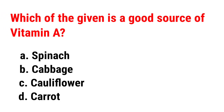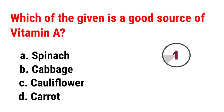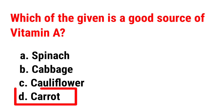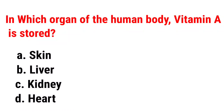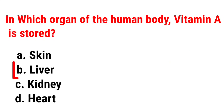Which of the given is a good source of Vitamin A? Correct answer is Carrot. In which organ of the human body is Vitamin A stored? Correct answer is Liver.